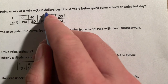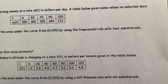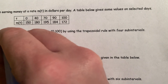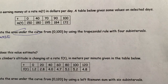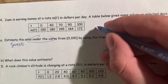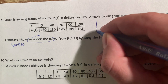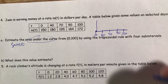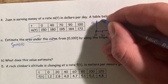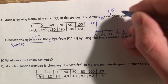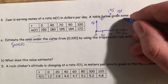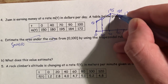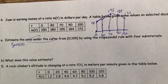Juan is earning money at a rate of M of T dollars per day. We're going to estimate the area under the curve — the integral of M of T — using the trapezoid rule with four subintervals. I strongly recommend you draw a quick sketch: the x values are 0, 40, 70, 90, 100 and the y values include 150, 180. It doesn't need to be perfect, but having it written out makes it much more likely you'll get it right.